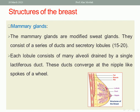Each lobule consists of many alveoli drained by a single lactiferous duct. These ducts converge at the nipple like spokes of a wheel. The components of the mammary glands are formed of multiple secretory lobules — 15 to 20 in number — and a series of ducts. Each lobule consists of alveoli drained by a single lactiferous duct, and the ducts converge at the nipple like spokes of a wheel.